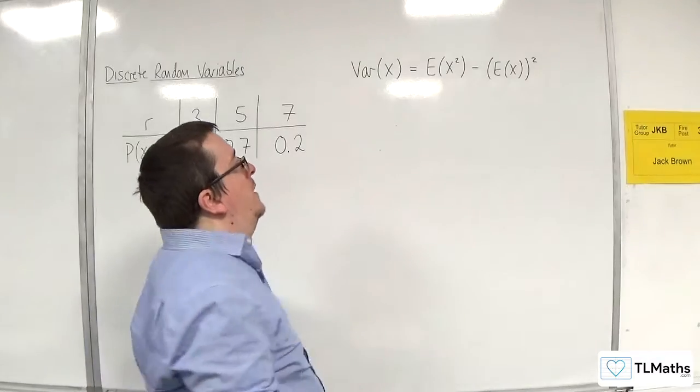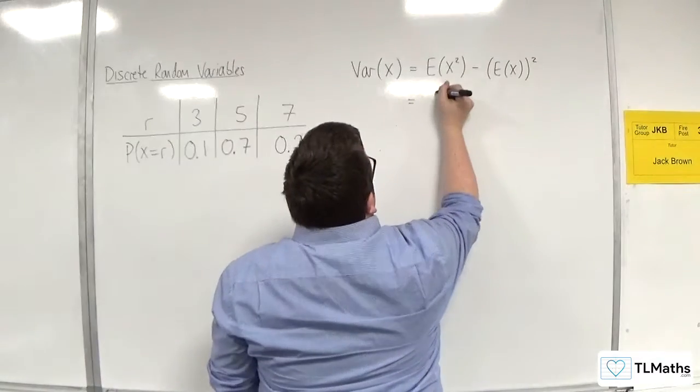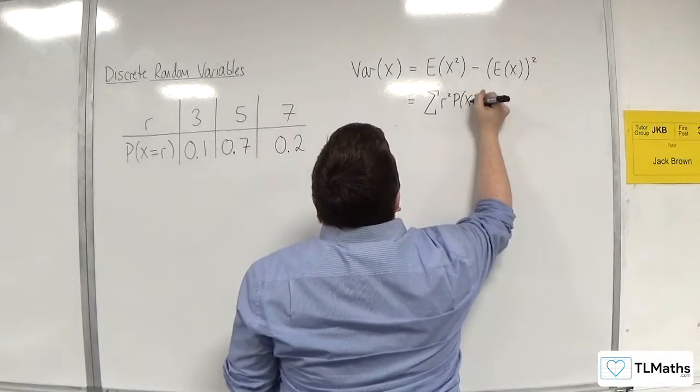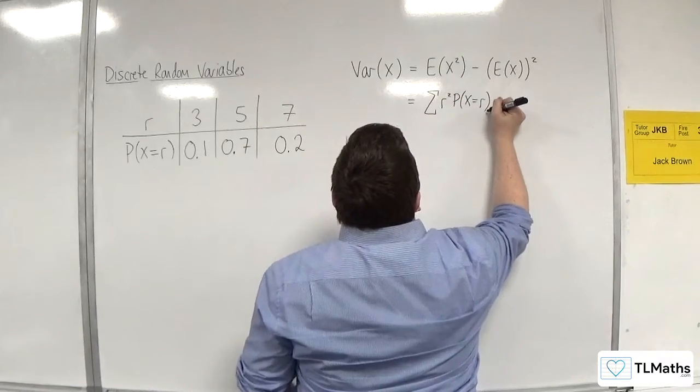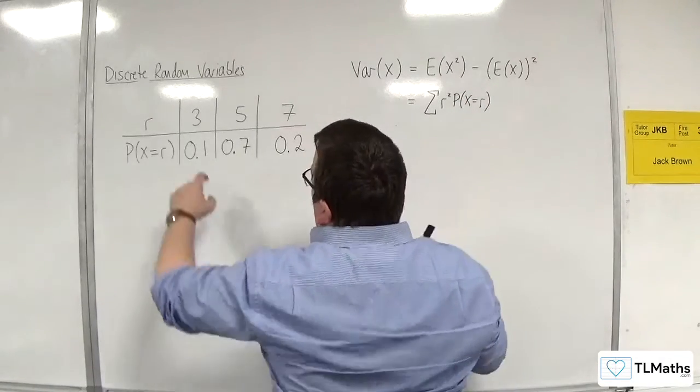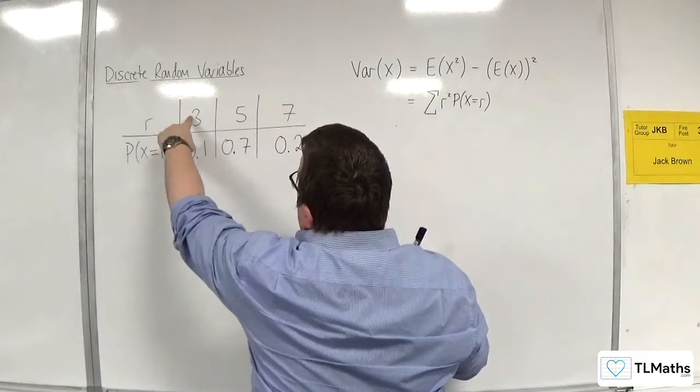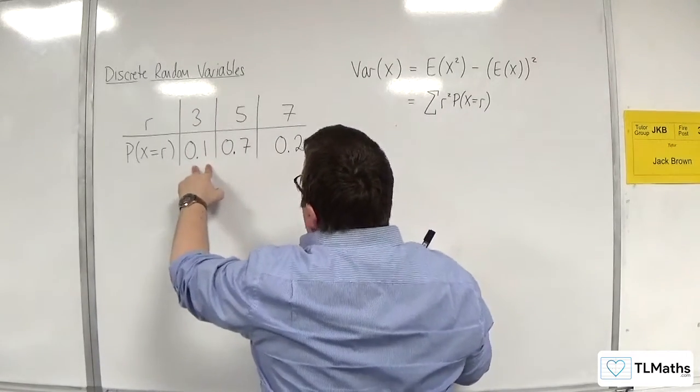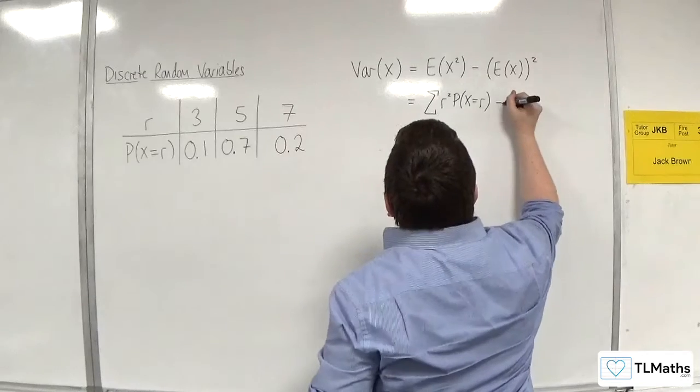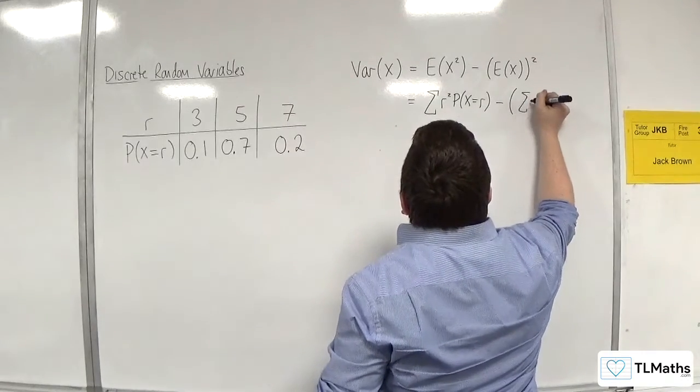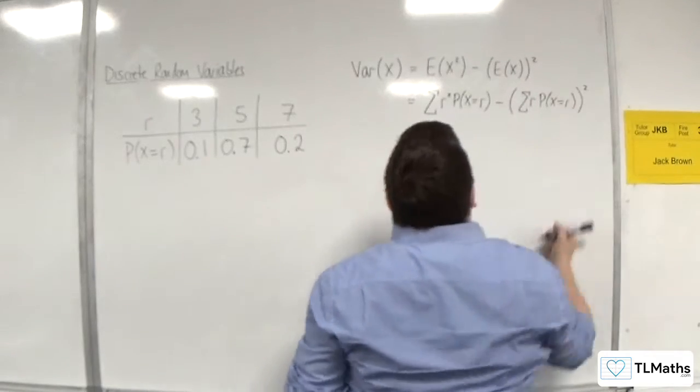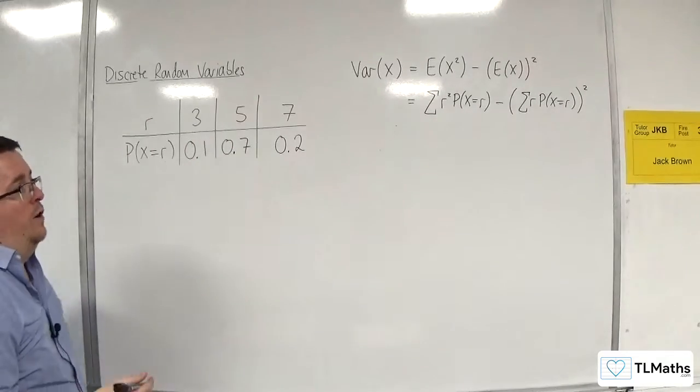E(X) squared is the sum of r squared times the probability of X being equal to r. So, what happens is that each of your r values get squared before they get multiplied by their respective probabilities. And here we've got the sum of r times the probability of X being equal to r, all squared. So, that's what it looks like longhand.